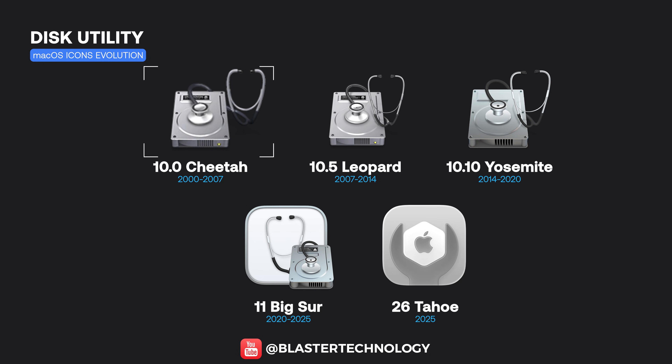Disk Utility originally featured a realistic hard drive icon with a stethoscope. It was visually simplified with the Yosemite release and brought to a much cleaner and more intuitive representation in macOS Tahoe.